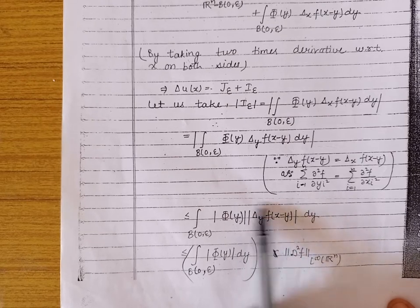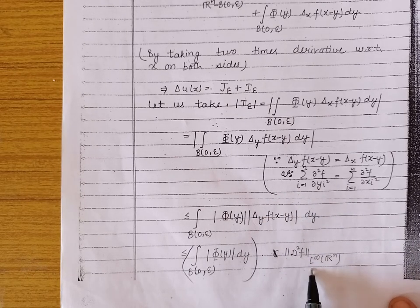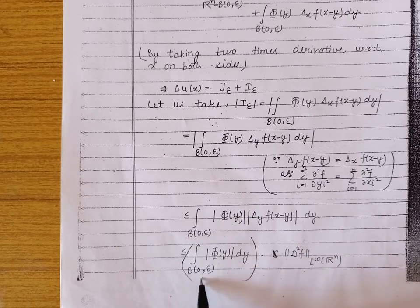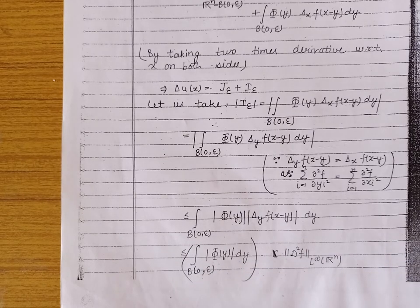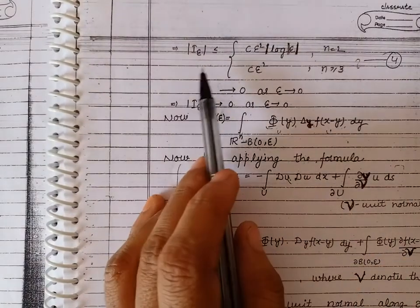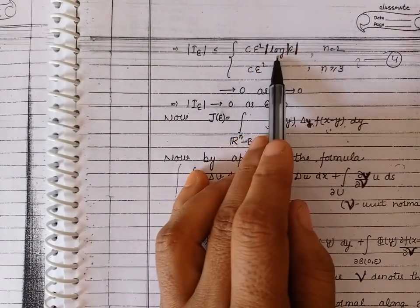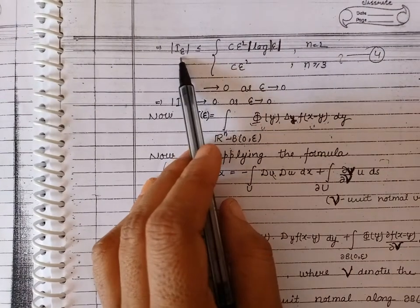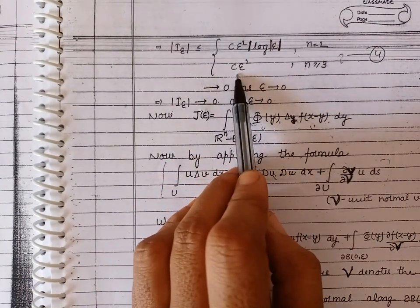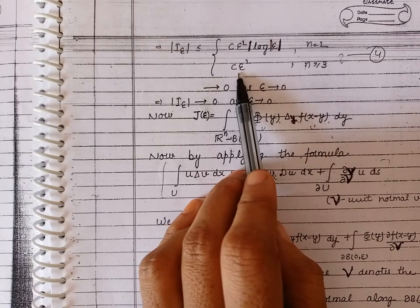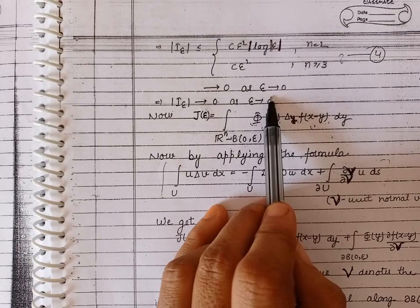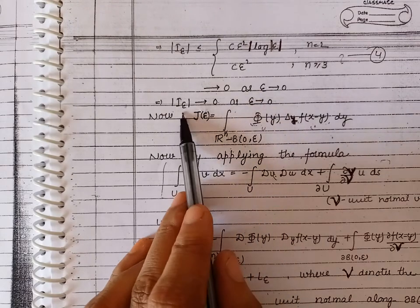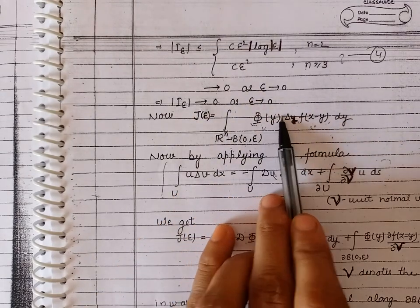This is further bounded by ‖D²f‖_{L∞} · ∫_{B(0,ε)} |φ(y)| dy. Using estimates for φ, we obtain: |I| ≤ C ε² |log ε| for n = 2, and |I| ≤ C ε² for n ≥ 3. As ε → 0, both expressions approach 0, so |I| → 0 as ε → 0.